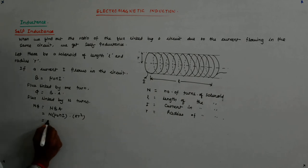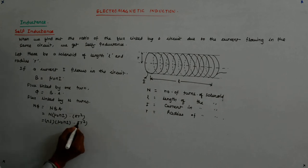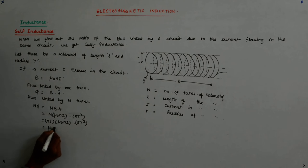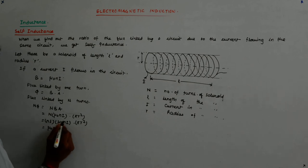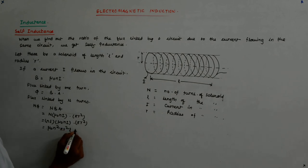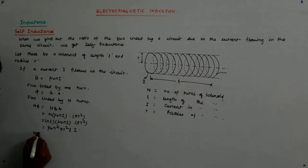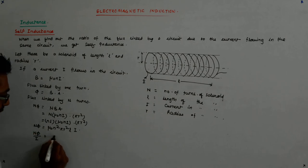Now, this is actually equal to - I write N as small n into L. μ₀NI/L stays at its own place, πR² is this. Now this becomes μ₀n² πR²L into I. So Nφ upon I becomes μ₀n²πR²L.